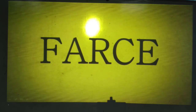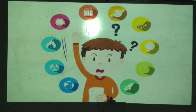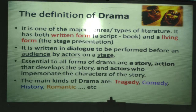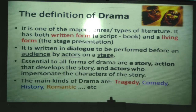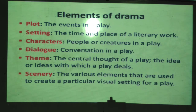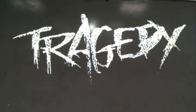To summarize: drama must have conflict, action, and crisis; it should be performed on the stage either in written or oral form. The basic elements of drama are plot, setting, characters, dialogue, theme, and scenery. The main types of drama are tragedy, comedy, and tragicomedy.